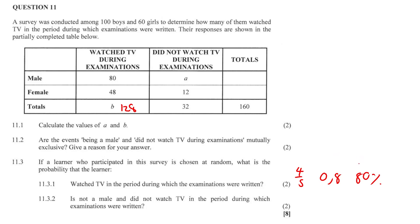Question 11.3.2: what's the probability that a learner is not a male and did not watch TV in the period during which examinations were written? So is not a male, which means that they're female and did not watch TV. So where female meets did not watch TV, it's going to be 12 over 160. If you want to simplify it, you can leave it as 3 over 40, or write 0.075, or simply 7.5%. Those are all your options. So yeah, contingency tables — they're pretty easy.